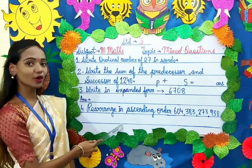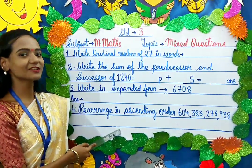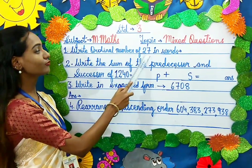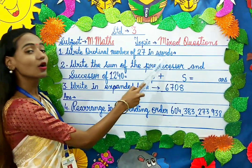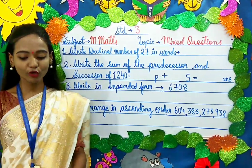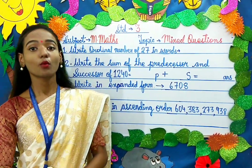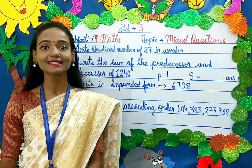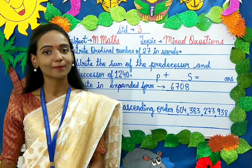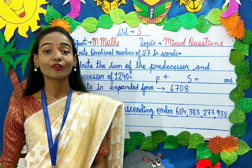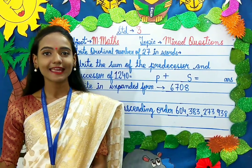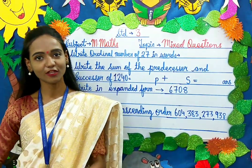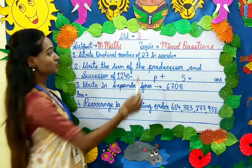Come children, let's solve it together. The first question: write the ordinal number of 27 in words. Now before we solve it, what are ordinal numbers? Ordinal numbers are numbers that tell us the position of something in a list — for example, first, second, third, and so on.